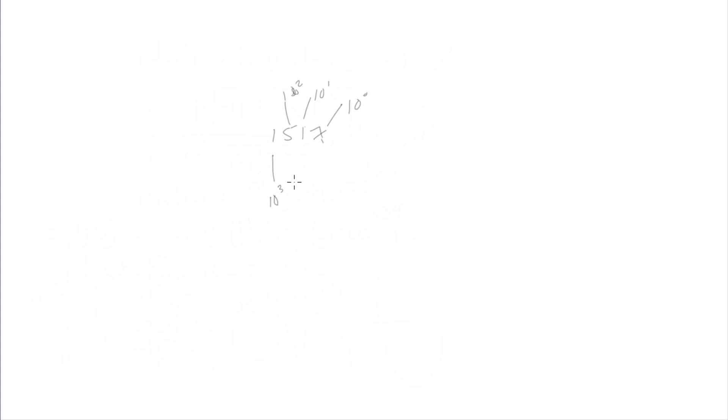How do we calculate a number like 1,000? Let's use 1517 instead — a random number. How do we get 1517 mathematically? We know this is the units column, the tens, the hundreds, and the thousands. The ones column is equivalent to 10 to the power of 0, which is 1. The tens column is 10 to the power of 1. The hundreds column is 10 to the power of 2, and the thousands column is 10 to the power of 3, and so on.